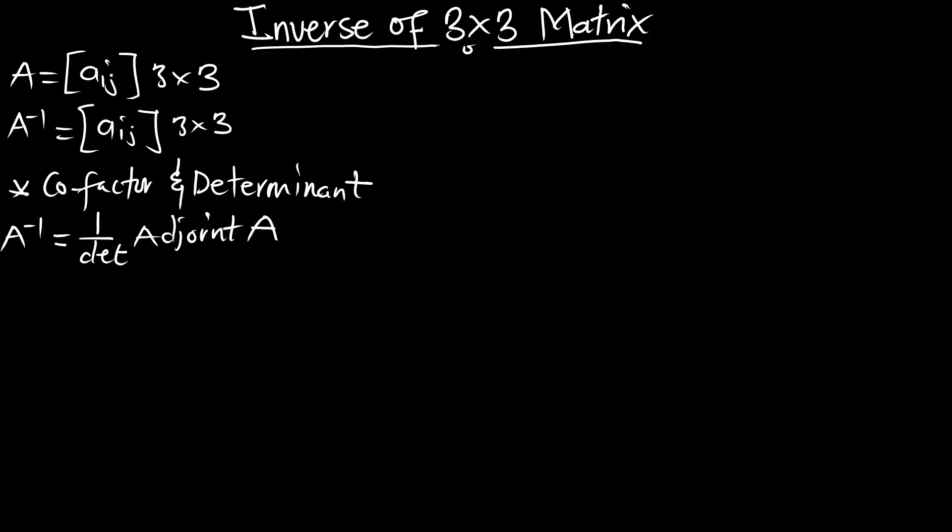Now we know how to find the determinant of a 3x3 matrix. We also know how to find the adjoint of a 3x3 matrix by transposing the cofactor matrix. With all that, we can multiply the adjoint by 1 over the determinant, and we are good to go.